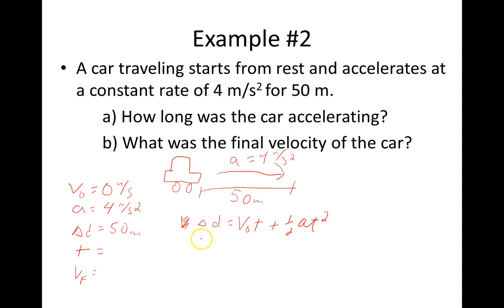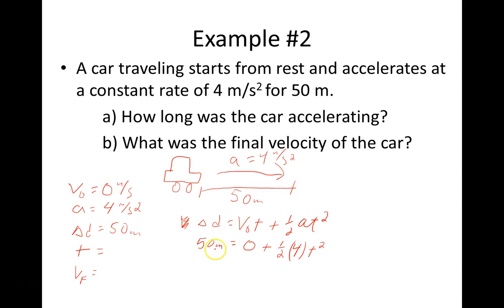That equation is: Δd = v₀t + ½at². Substituting: 50 = 0 + ½(4)t². Since ½ × 4 = 2, we get 50 = 2t², so t² = 25, and t = 5 seconds.